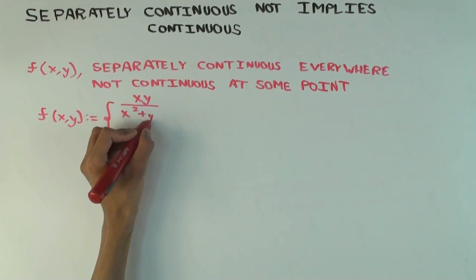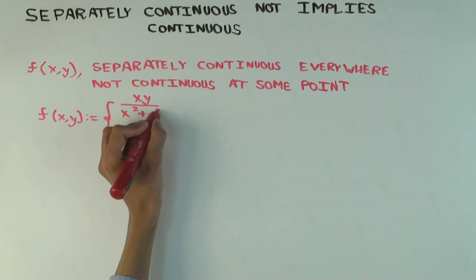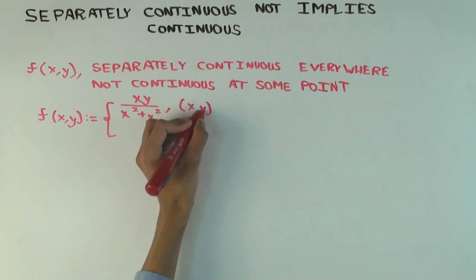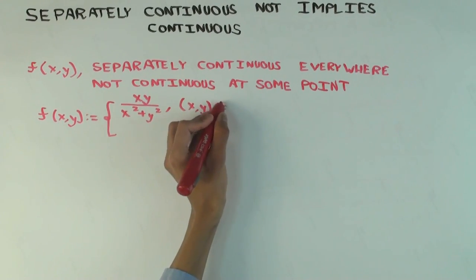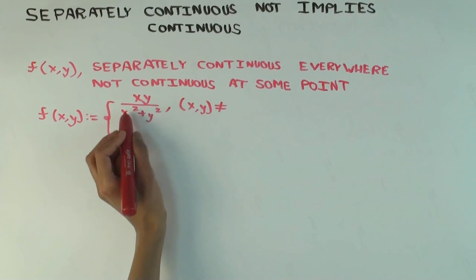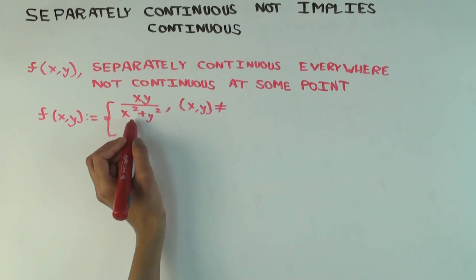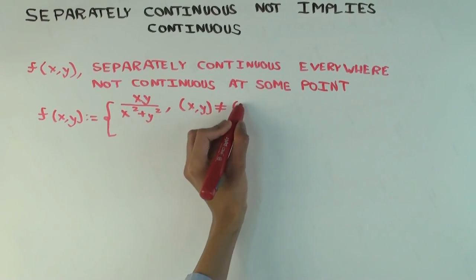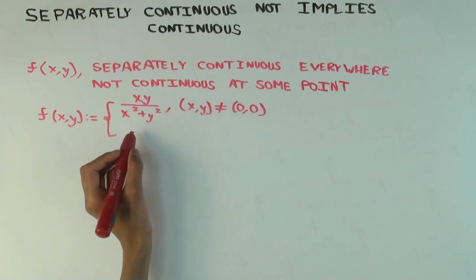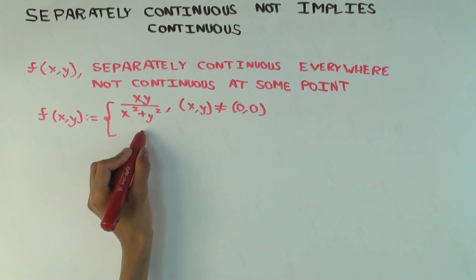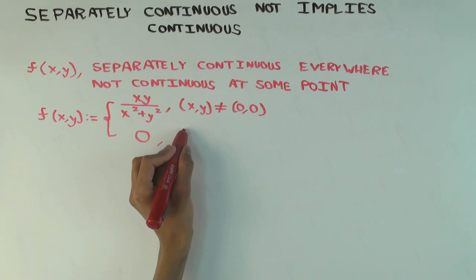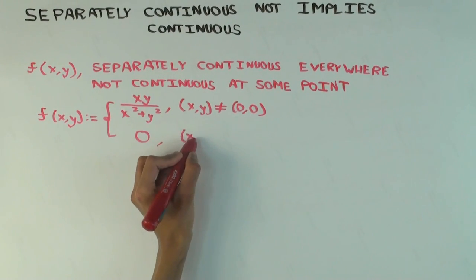So this function is xy over x squared plus y squared, when xy is not (0,0) — which is the only point where you have trouble evaluating this, because at any other point the denominator is not 0 — and at (0,0) I just define it as 0.